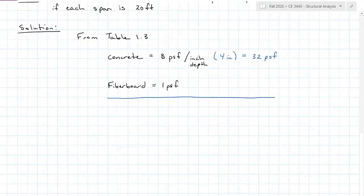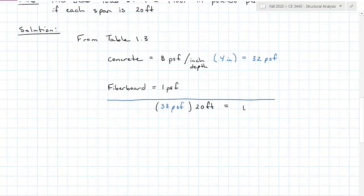So if we have 32 pounds per square foot of concrete and one pound per square foot for fiberboard, that gives us 33 pounds per square foot for load over the floor span. We were also given that our floor span is 20 feet, which equals 660 pounds per foot.